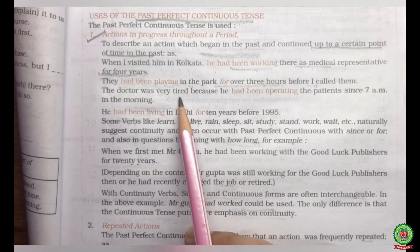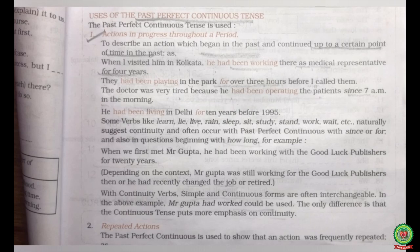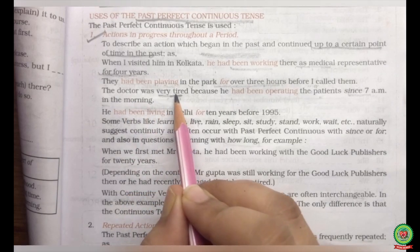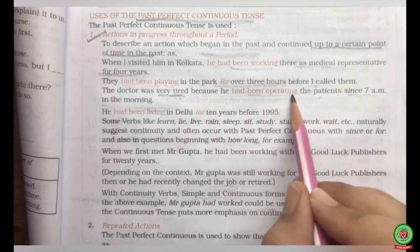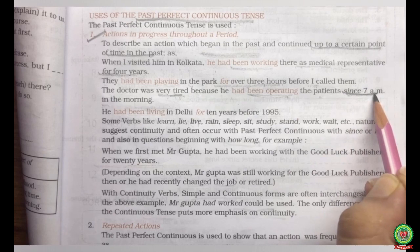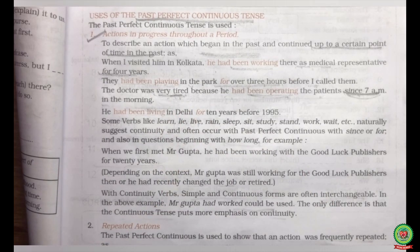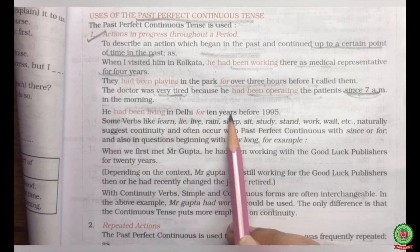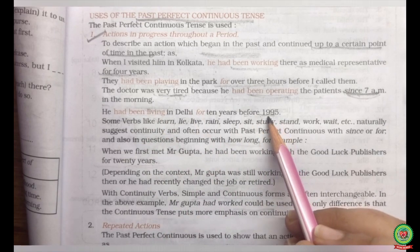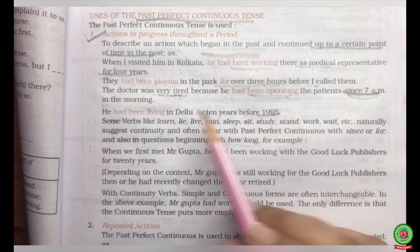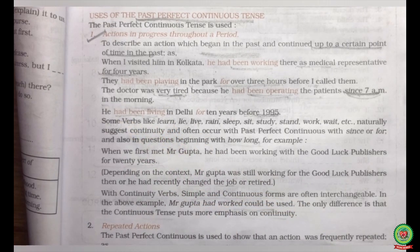More examples: 'The doctor was very tired because he had been operating on patients since 7 a.m.' — meaning his work started at 7 a.m. and he was tired by that point in the past. Also: 'He had been living in Delhi for 10 years before 1995' — meaning that action started before 1995 and continued up to that point in the past. In such situations we use the past perfect continuous tense.